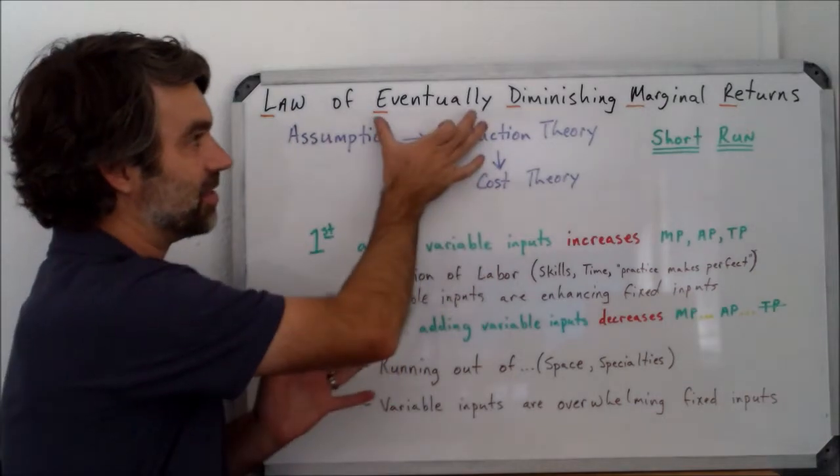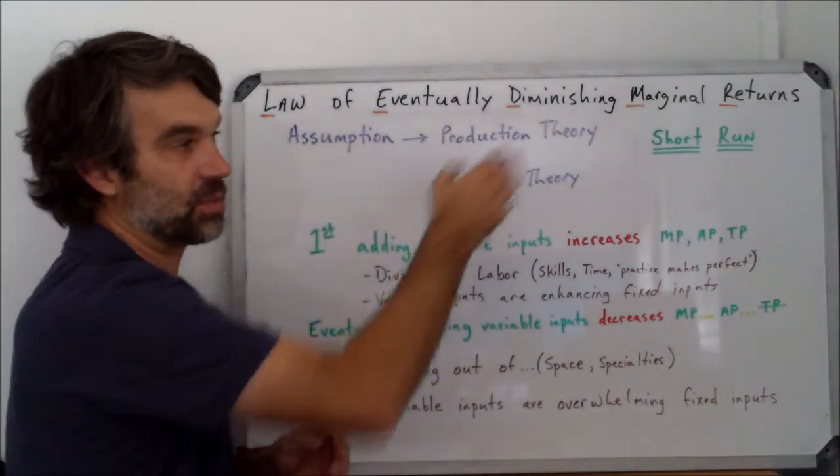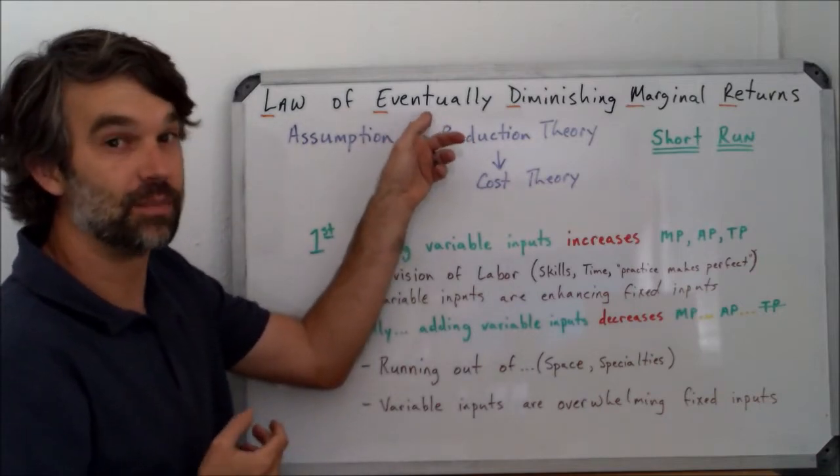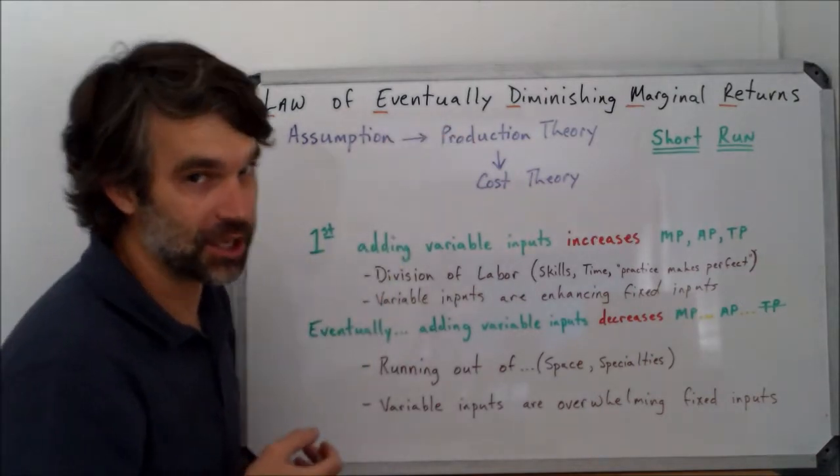Oftentimes we'll drop maybe the 'eventually' and we'll just say law of diminishing marginal returns, but it's important that you at least always keep the 'eventually' in mind. Eventually you'll know why.